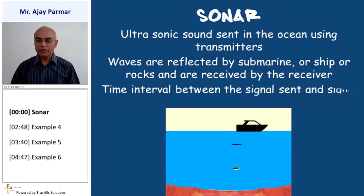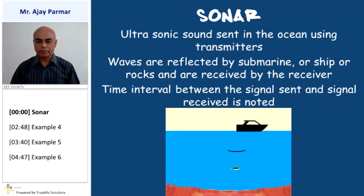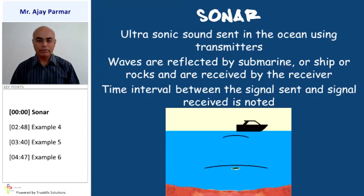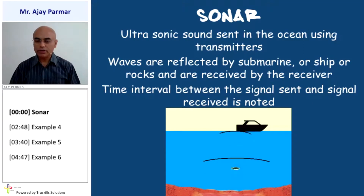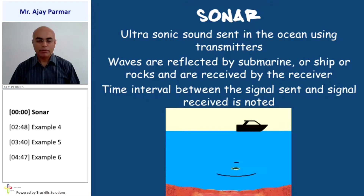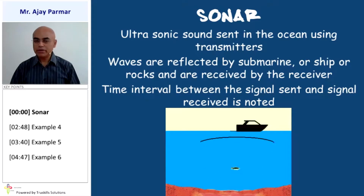The time interval between the signal which is sent and the signal which is received is noted down. That time would be double the time — that is, the time t covers the journey from the ship to the bottom or the respective place and back to the ship. That means the depth can be measured by this simple method.